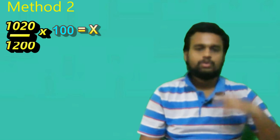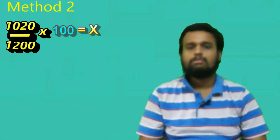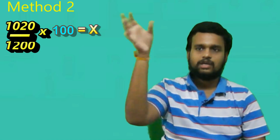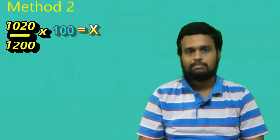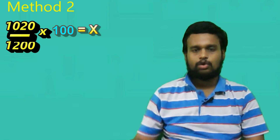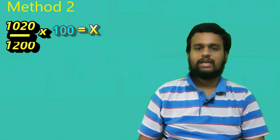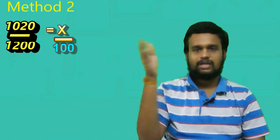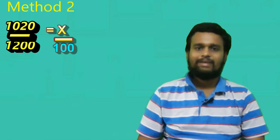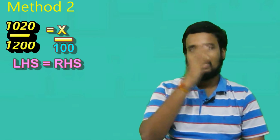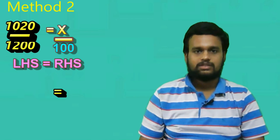This is method 2. In method 2, it is very simple. If you have another method, if you have 100 equal to x, you will have equal to sin. So if you have a basic equation, LHS is called RHS.